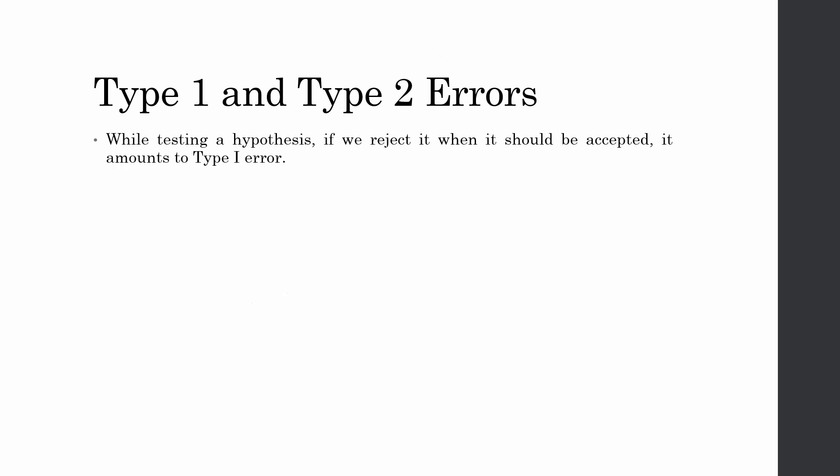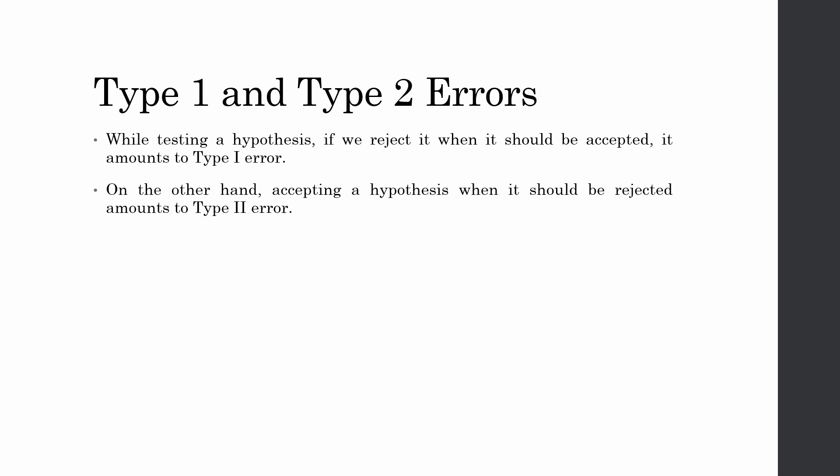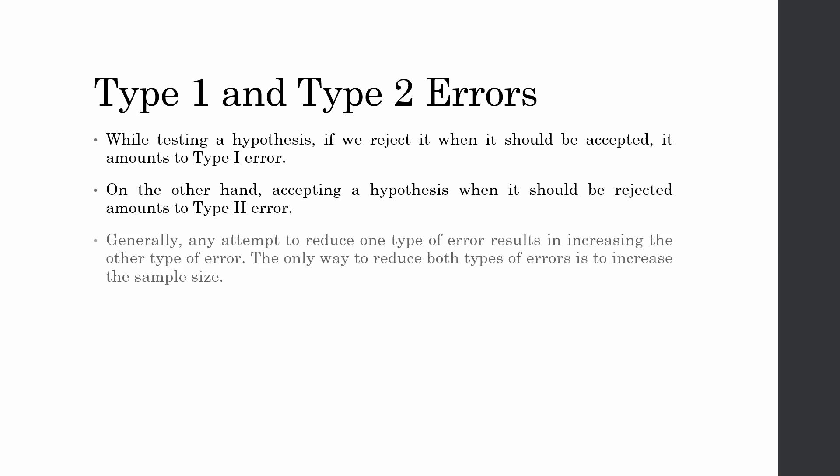In hypothesis testing, if we reject a hypothesis when it should be accepted, it amounts to a Type 1 error. On the other hand, when you accept a hypothesis when it should be rejected, it is called a Type 2 error. Any attempt to reduce one type of error tends to increase the chances of the other. The only way to minimize both errors is to improve the sample size.